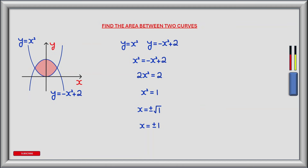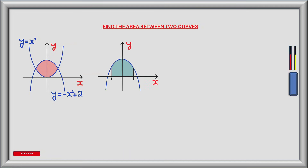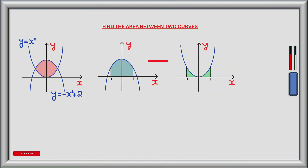Now let's look at each of the curves in turn between the limits of x equals minus 1 and x equals 1. For y equals minus x squared plus 2, the area between x equals minus 1 and x equals 1 and under the curve is shown by the blue shaded region. For y equals x squared, the area under the curve between those limits is shown by the green shaded region. If we subtract the area of the green shaded region from the area of the blue shaded region, we'll find the area between the curves shown by the red shaded region.